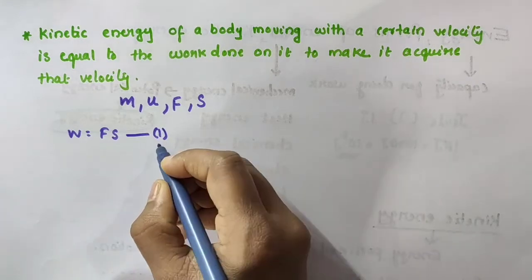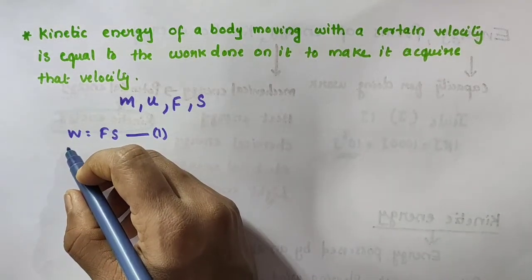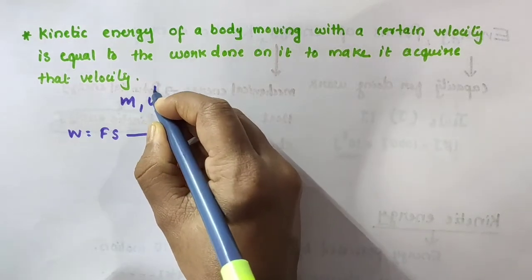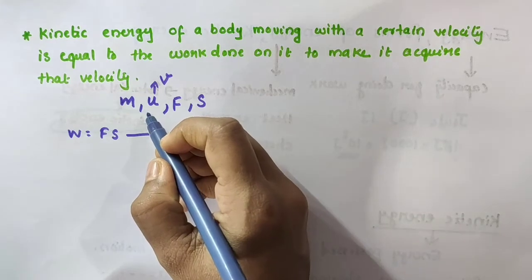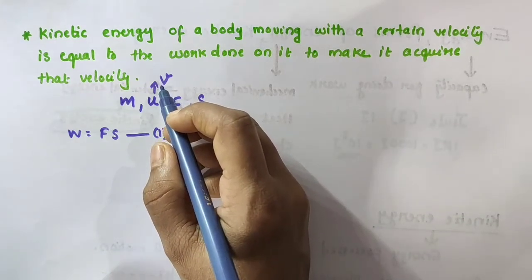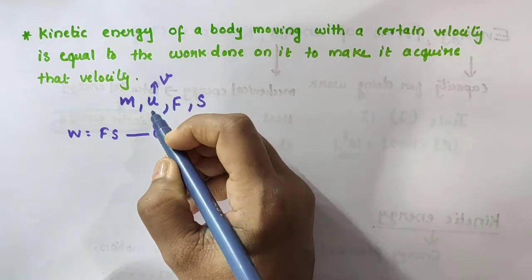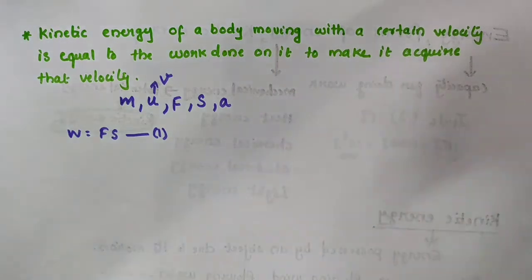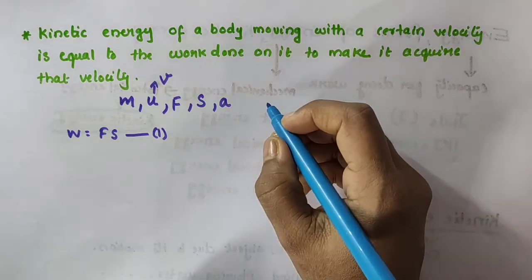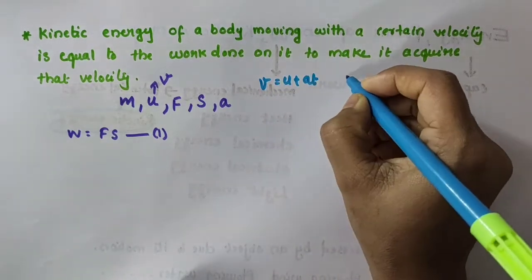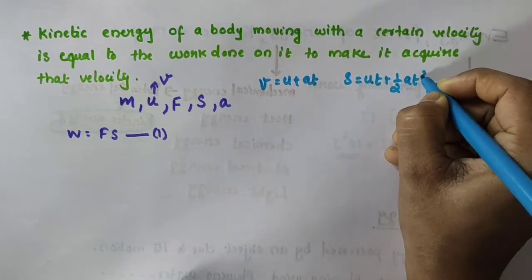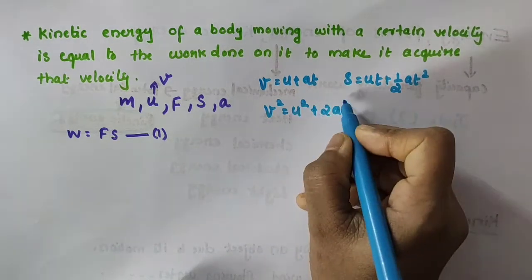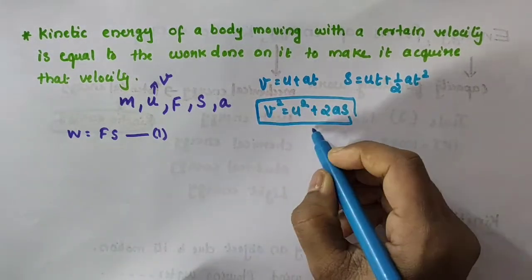So W equals F into S — taking this as equation number 1. This work done on the object will cause a change in the object's velocity. Let the object's velocity change from U to V, where U is the initial velocity and V is the final velocity. When there is a change in velocity, there is an acceleration too. Let the acceleration be A. We have three equations of motion: V = U + AT; S = UT + ½AT²; and V² = U² + 2AS.